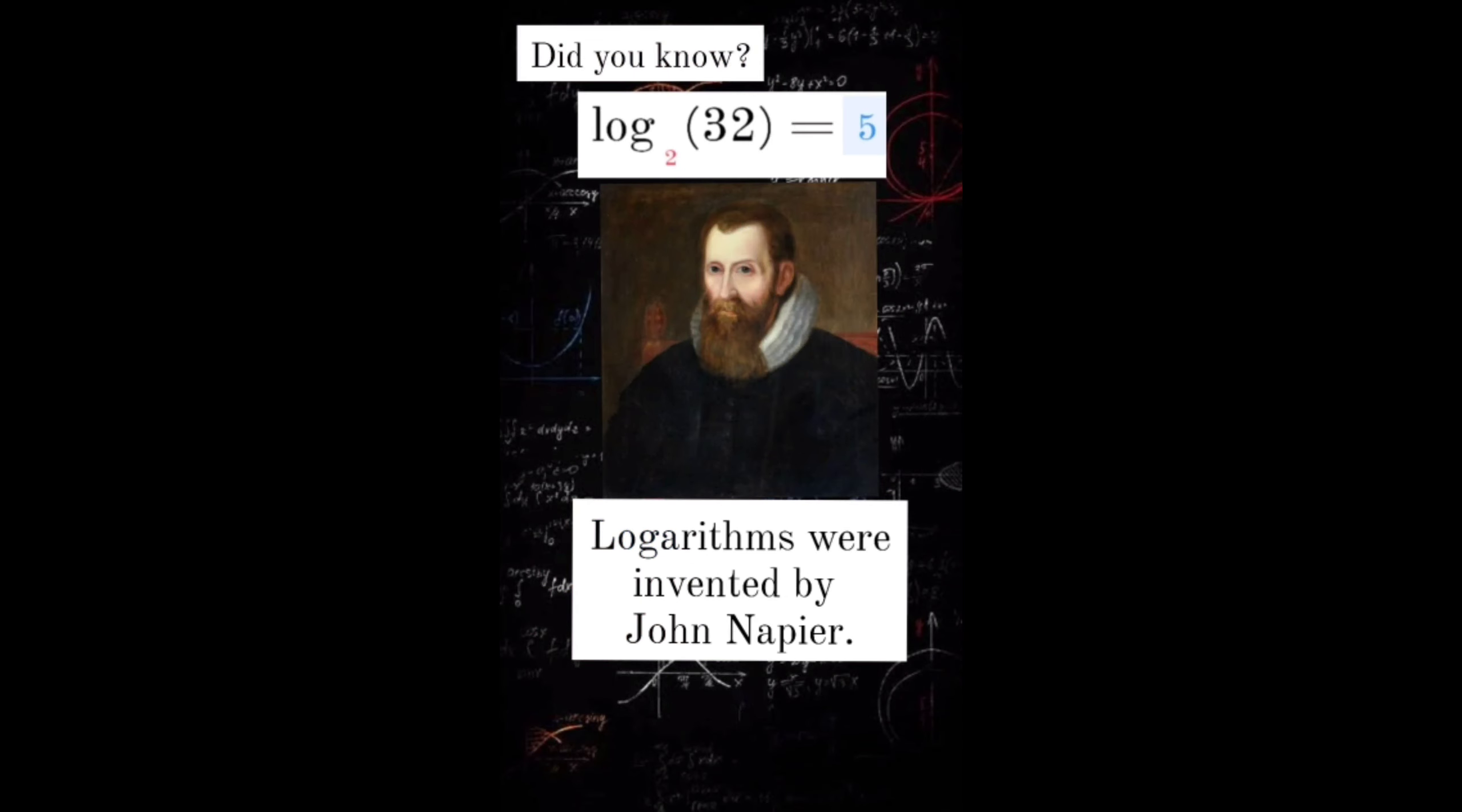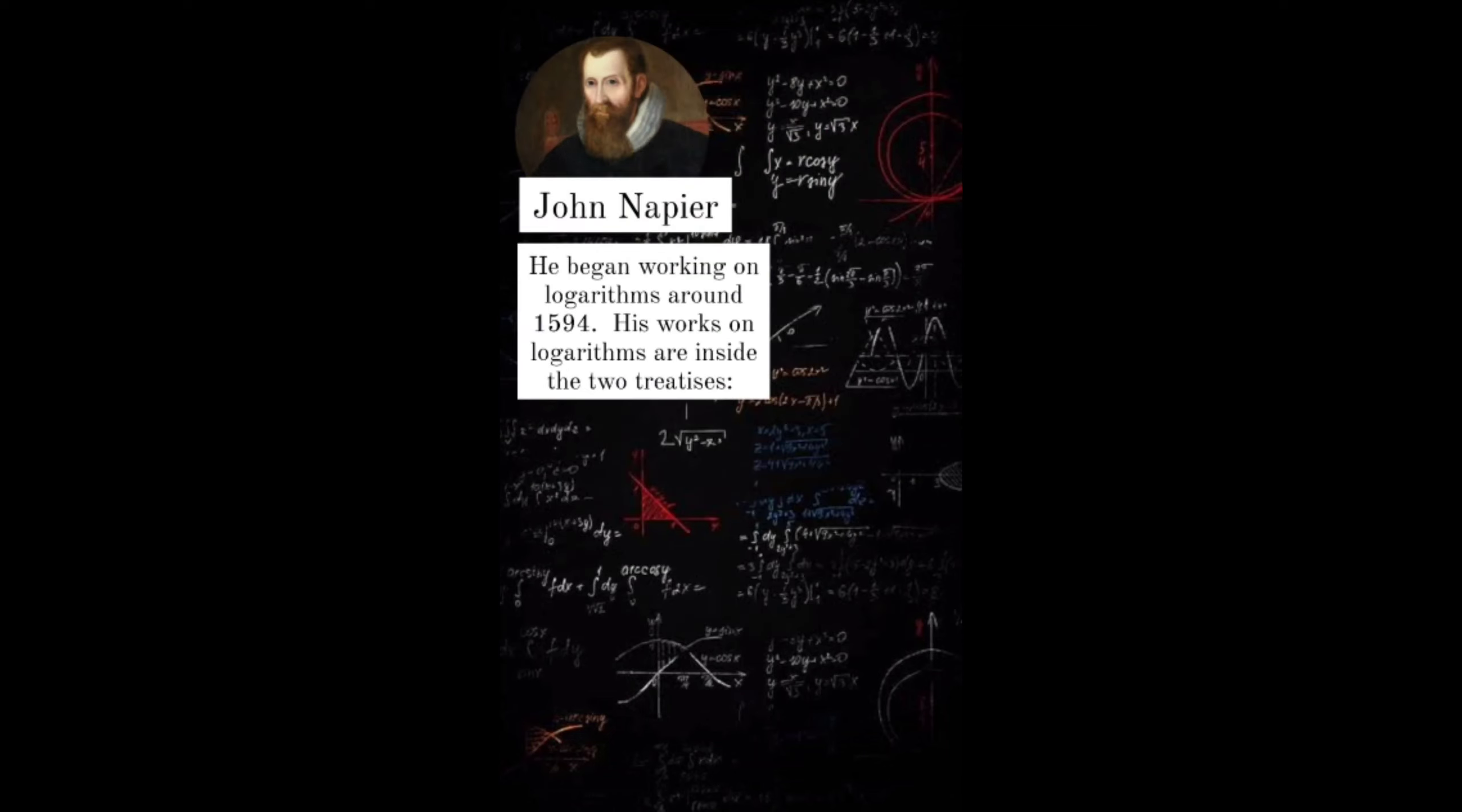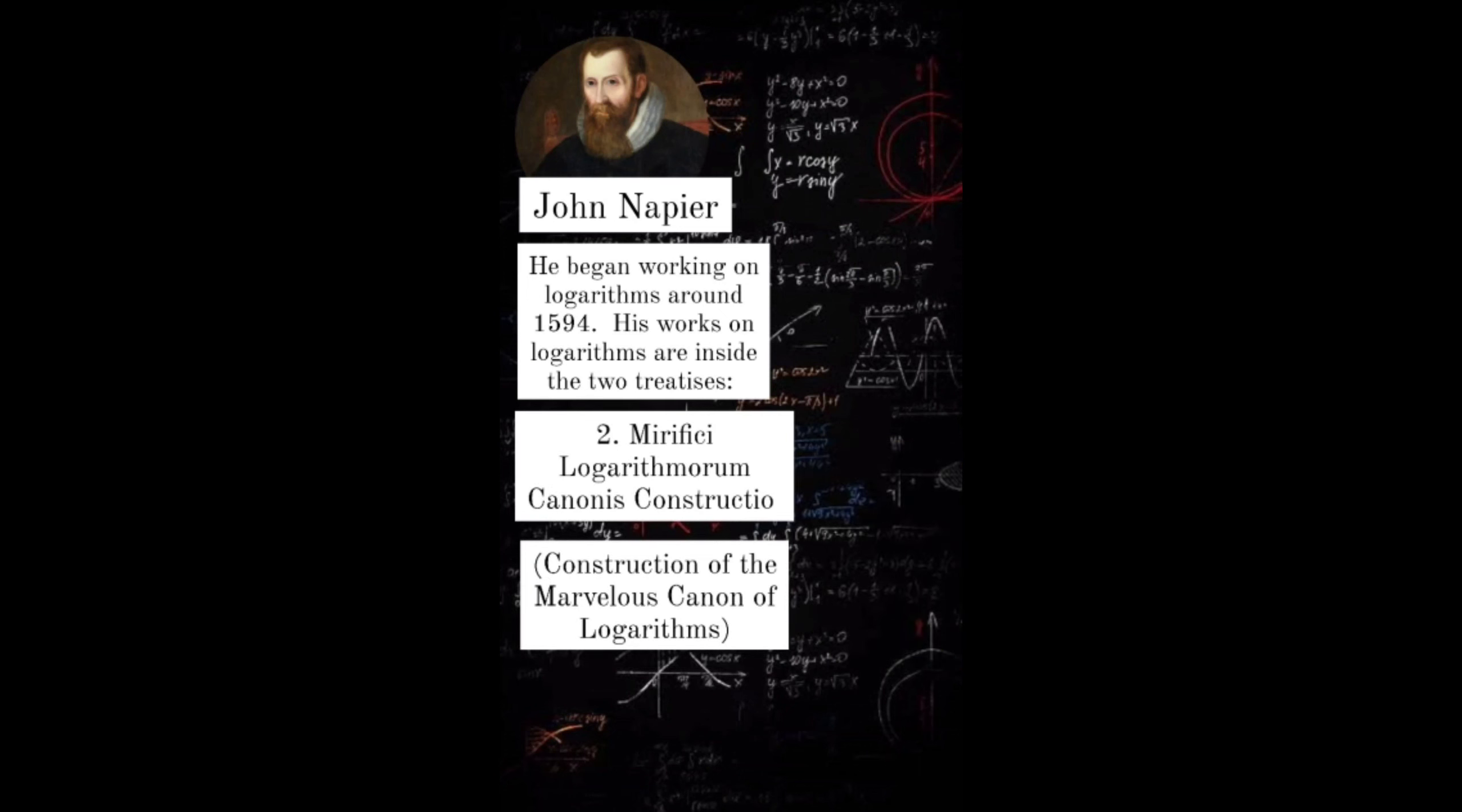Did you know? Logarithms were invented by John Napier. He was a Scottish mathematician and theological writer. He was born in 1550 in Merchiston Castle, Scotland. He began working on logarithms around 1594. His works on logarithms are inside two treatises: Mirifici logarithmorum canonis descriptio, or description of the marvellous canon of logarithms, and Mirifici logarithmorum canonis constructio, or construction of the marvellous canon of logarithms.